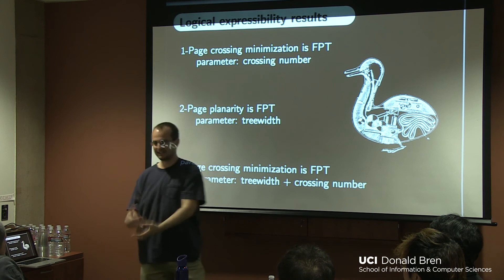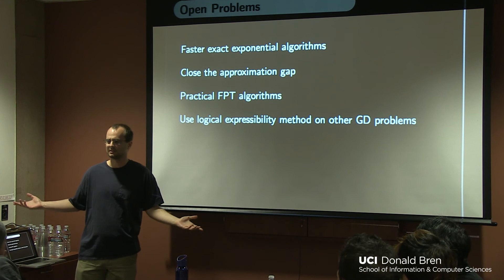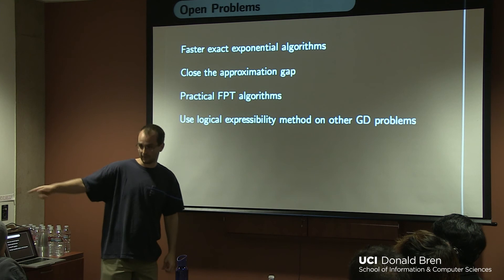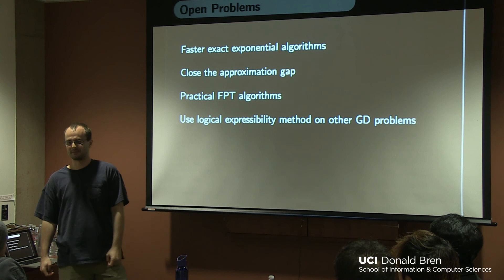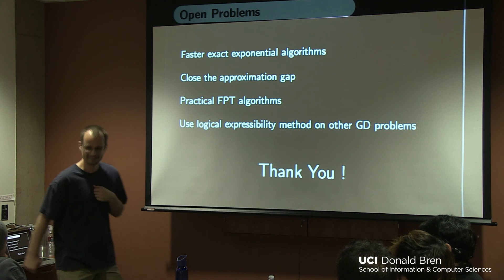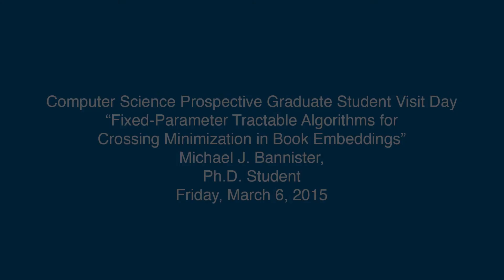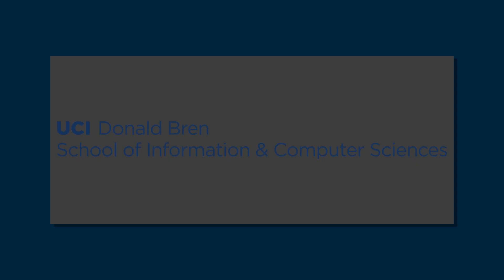Just to say there are many open problems still here. Faster exact exponential algorithms is the main one. That would get us towards actually practical algorithms. Close the approximation gap. Either prove the heuristics actually work well, or find new algorithms that have provable guarantees. Practical FPT algorithms. And if we've given up on practical, let's see how much we can push the logical to other problems. Because it has not been widely used to many problems. So very different pace from the other talks. But yes, we are the mathematicians here. We go more mathematical than this, in case you were worried that this isn't technical enough. Thank you very much.